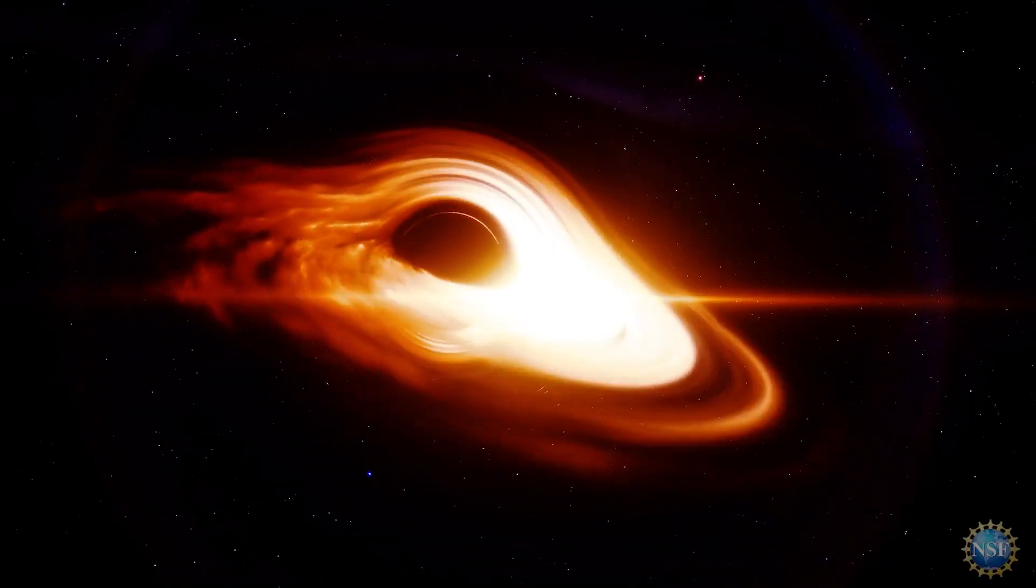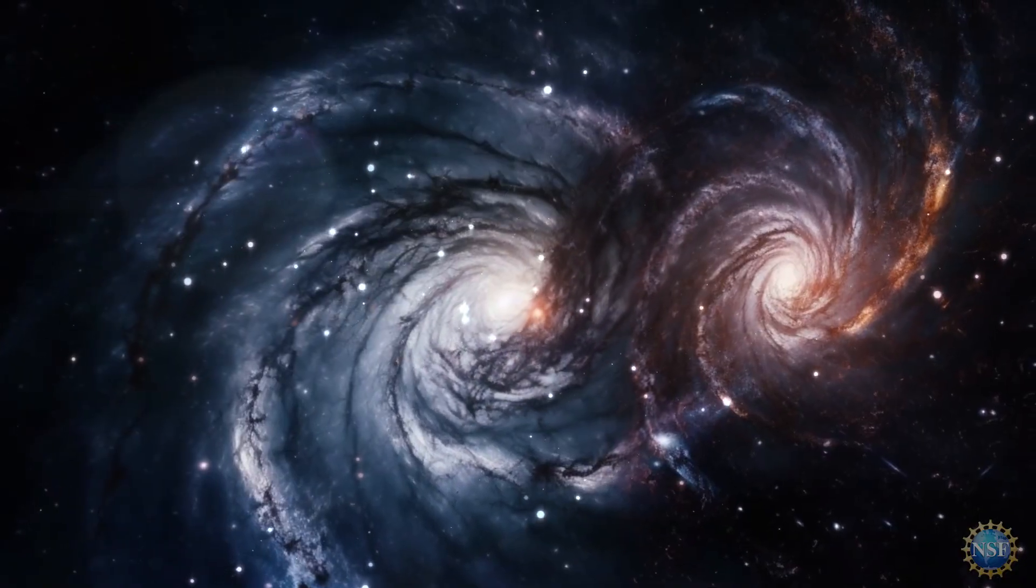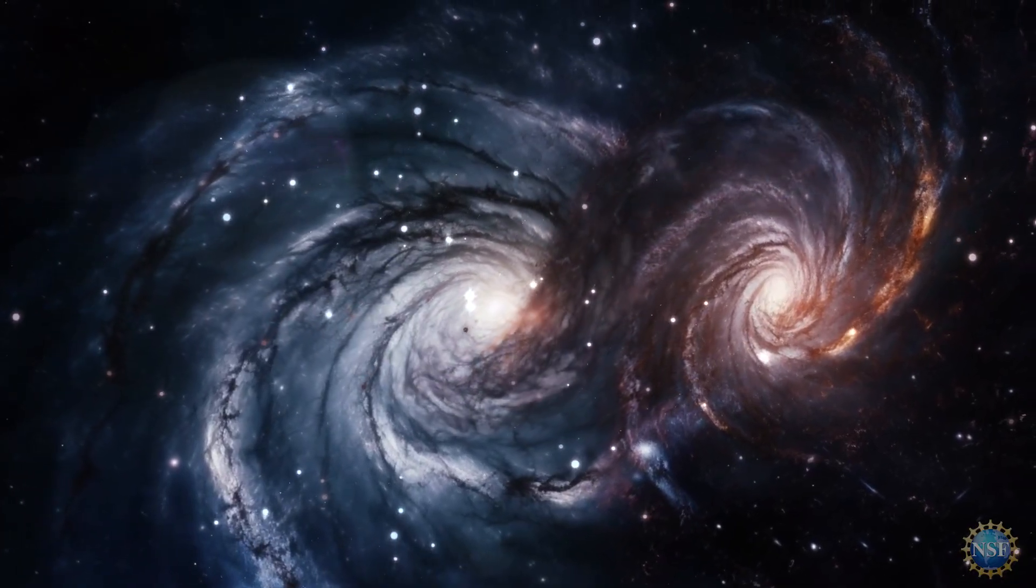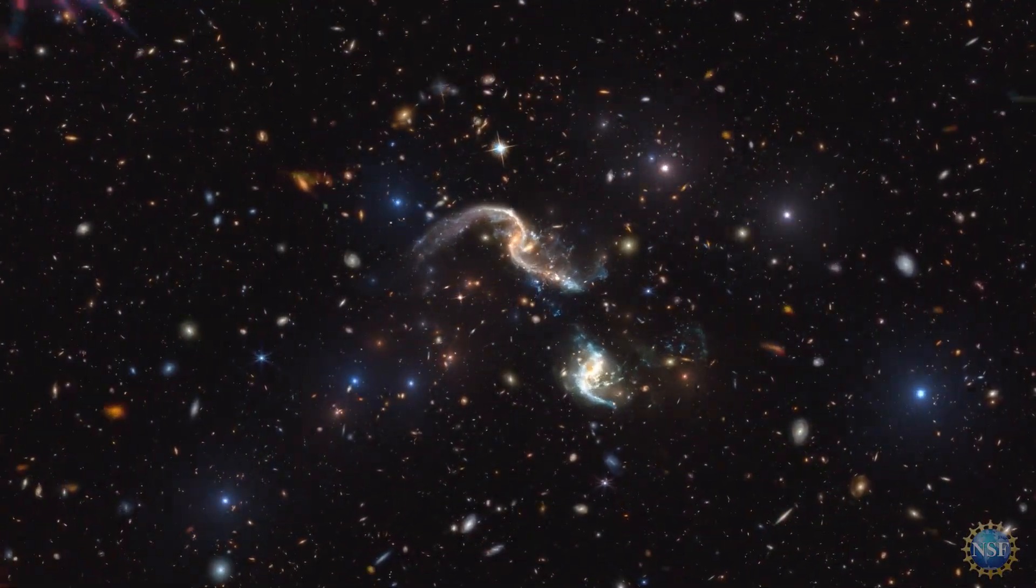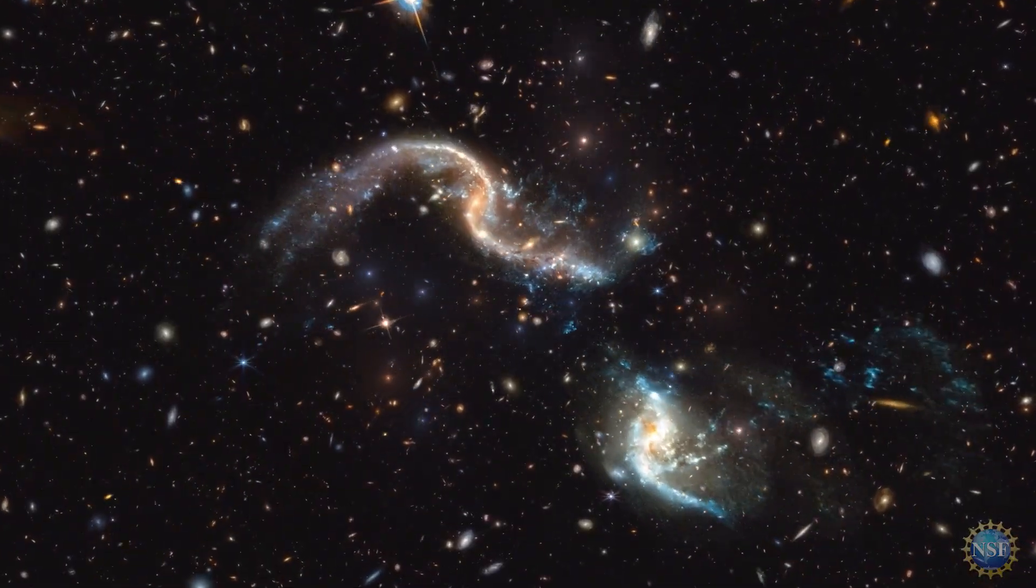Supermassive black holes lurk in the hearts of most galaxies, and galaxies grow by merging with other galaxies. When that happens, their black holes also merge and grow, becoming more and more massive over time.